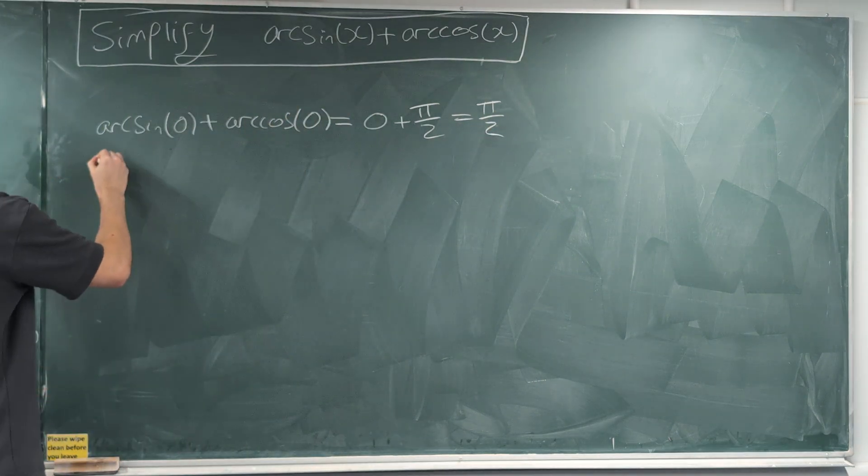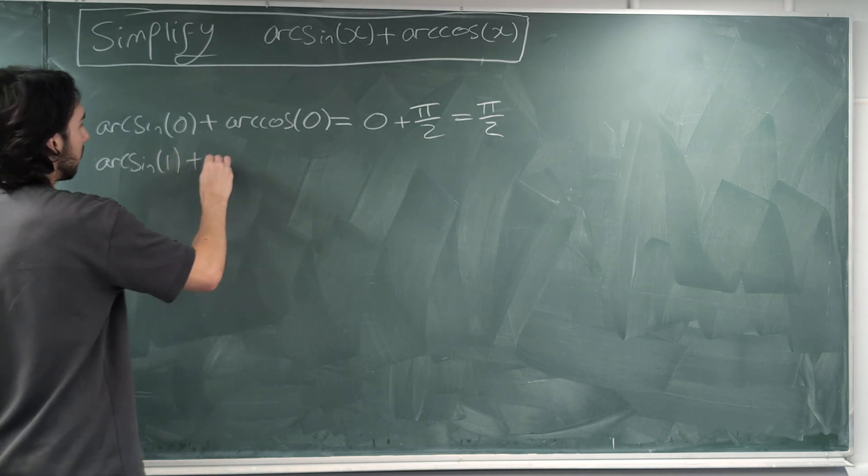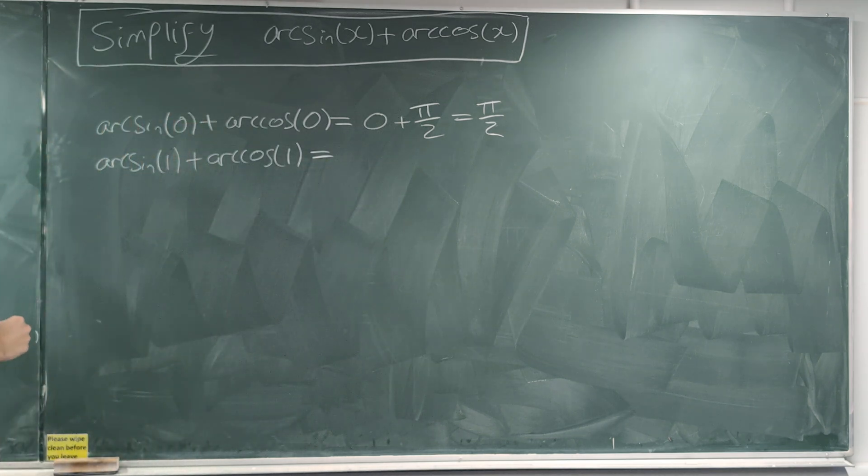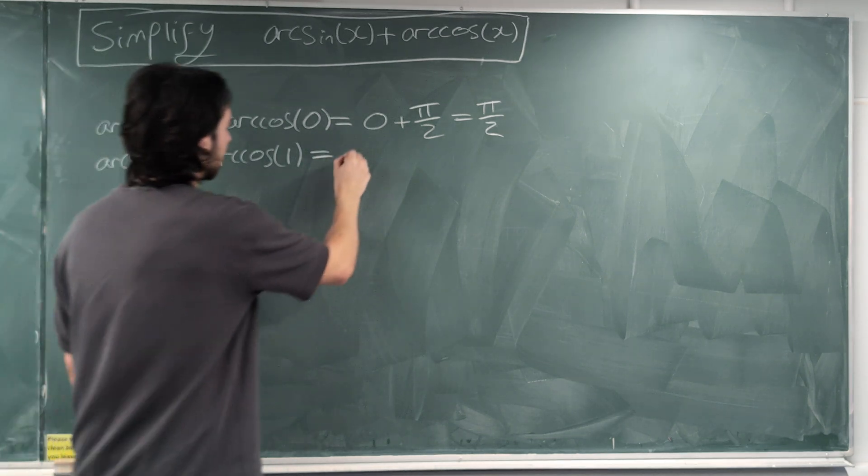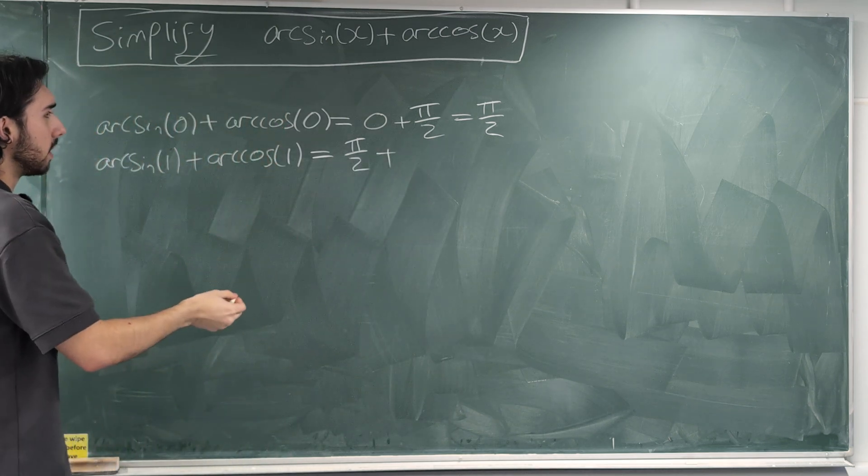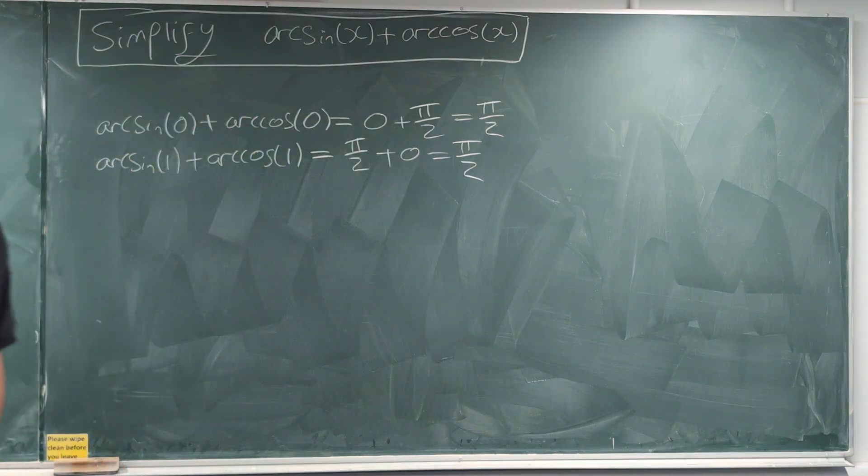Okay, who cares? Well, if we try a different number, like 1, arcsin(1) + arccos(1), what does that give us? Well, arcsin(1) is π/2, and arccos(1) is 0. Okay, but π/2 again.